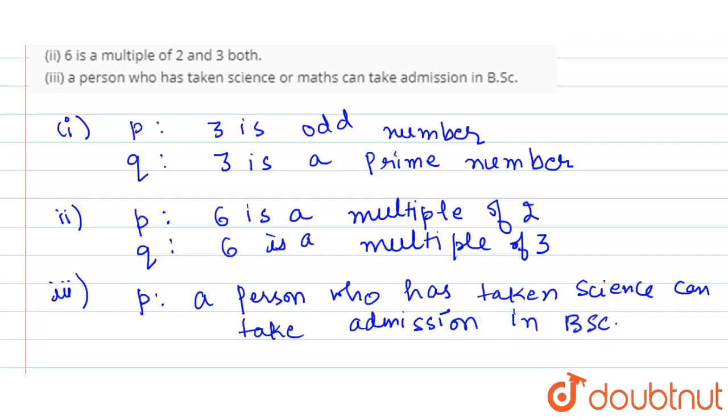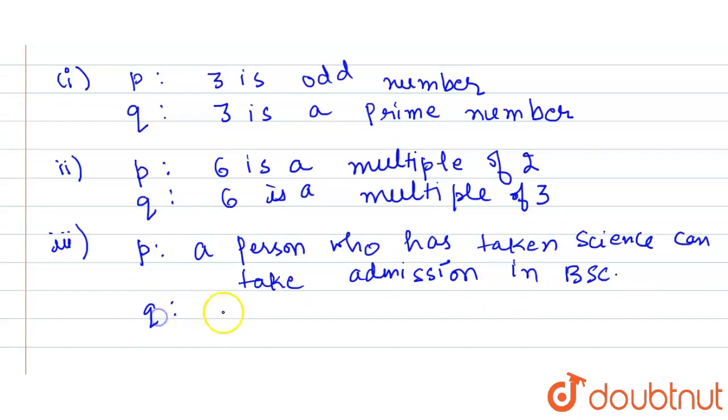And the second component statement is: a person who has taken maths can take admission in B.Sc.